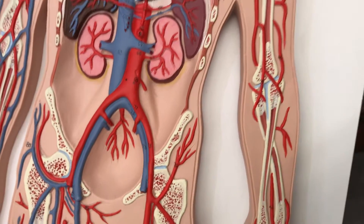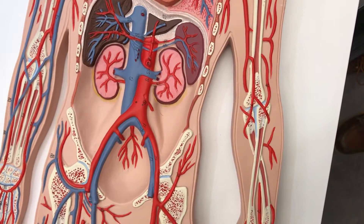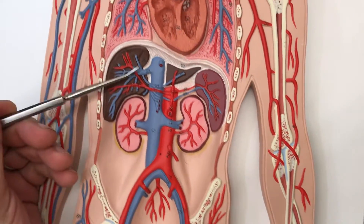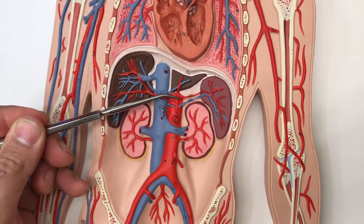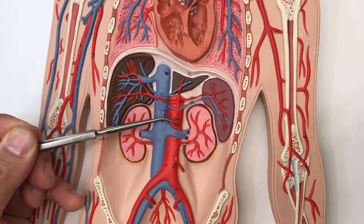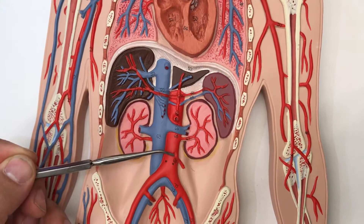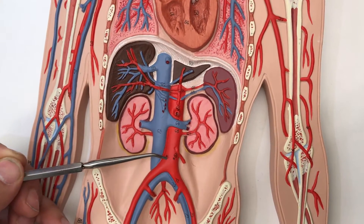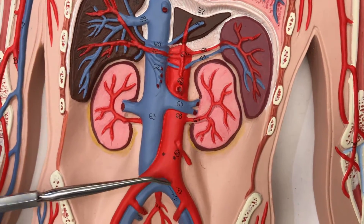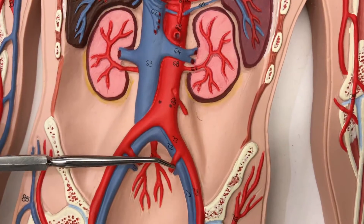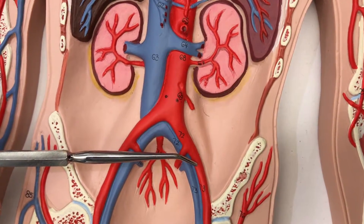Looking at the model here, we have the abdominal aorta. This is your celiac trunk, superior mesenteric artery, inferior mesenteric artery, and your two gonadal veins. And these are your two common iliacs, and then your internal and external iliac arteries.